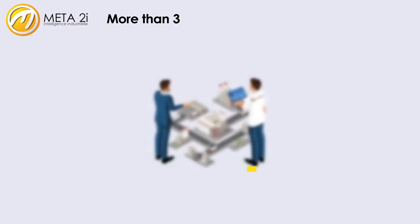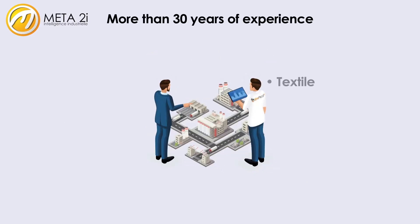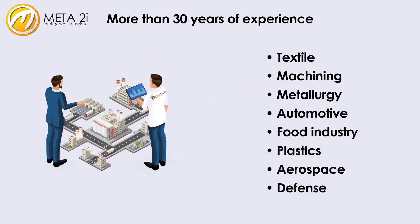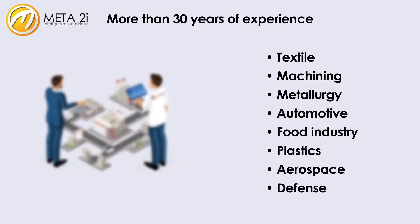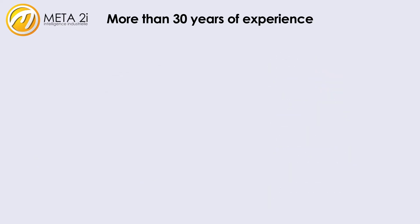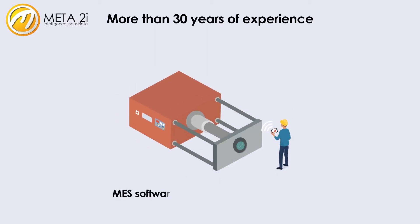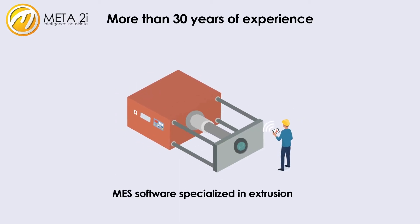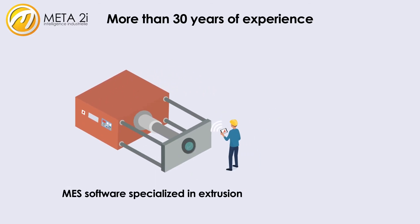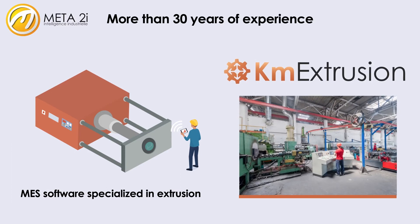For more than 30 years, Meta 2i has accompanied industrialists in many sectors of activity. Meta 2i has acquired expertise in the field of aluminum extrusion, developing software with custom applications which solve the key challenges of this business, improving and digitizing all production flows.